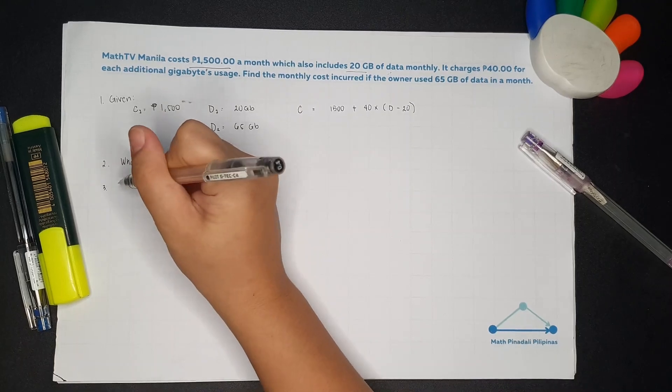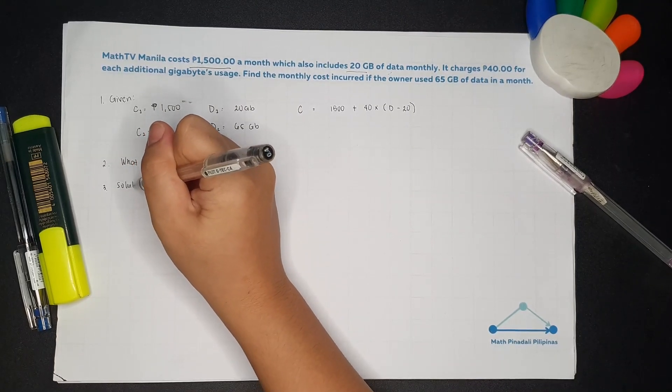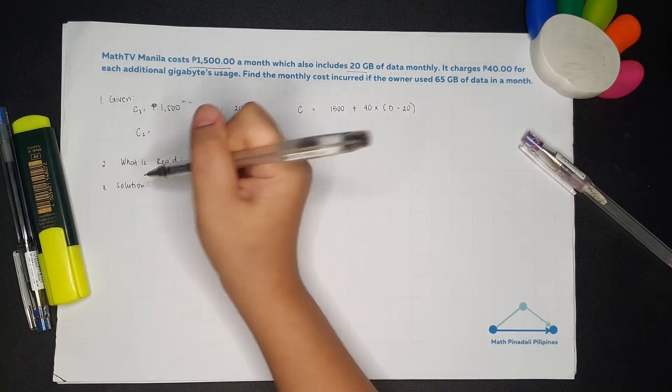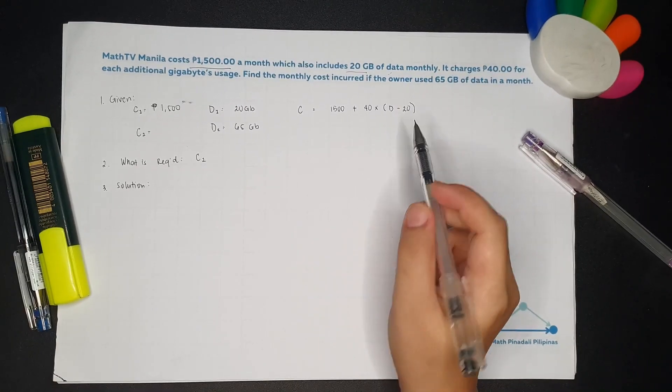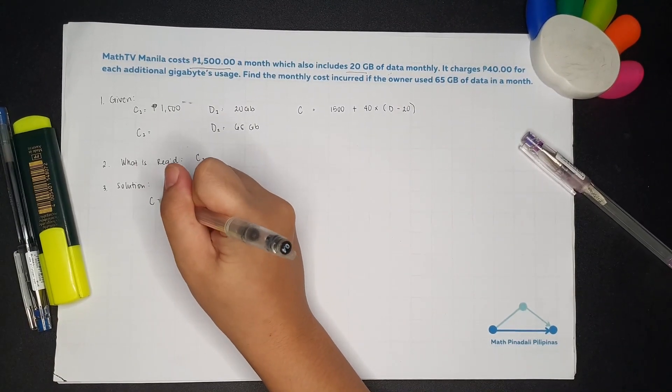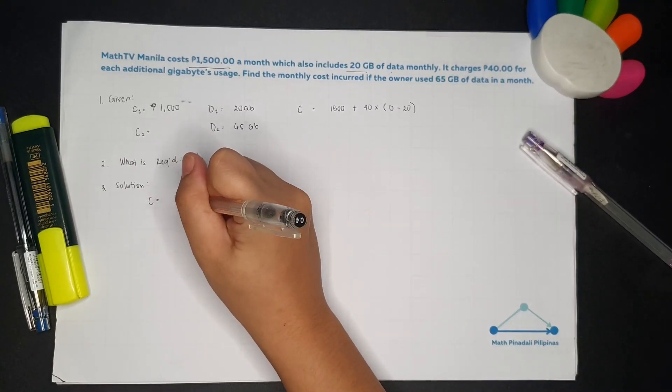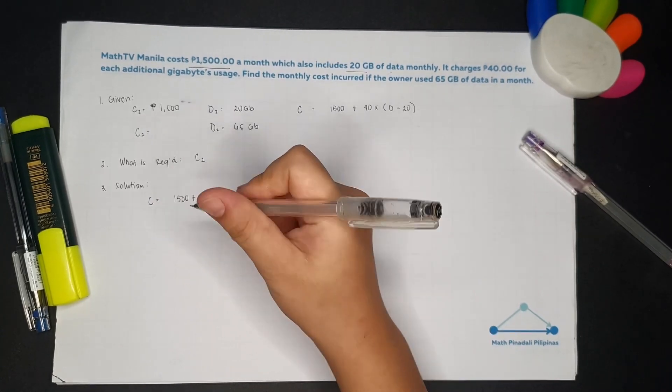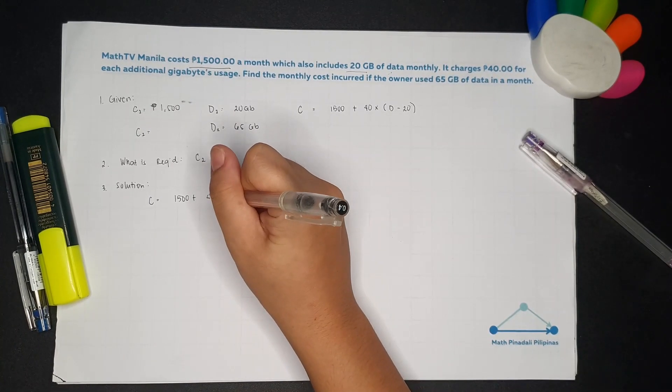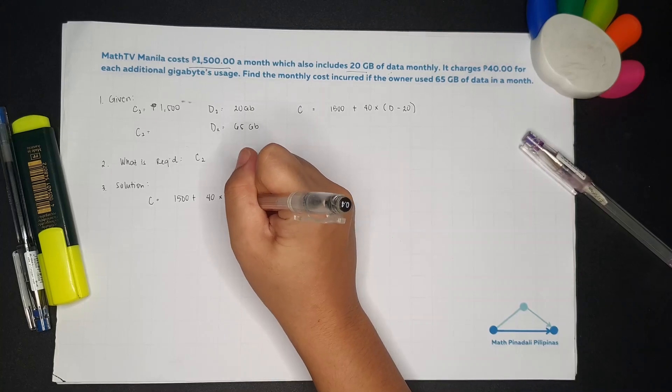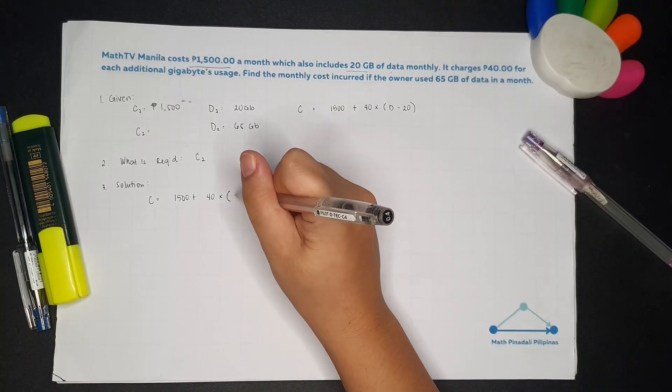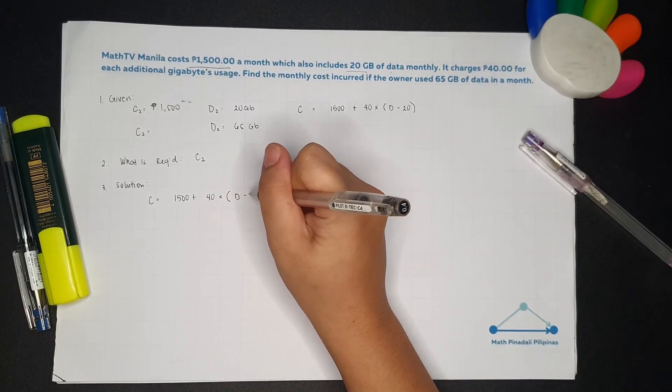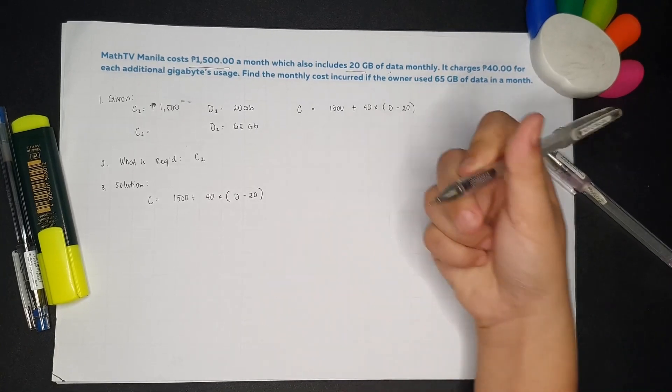So the next one is the solution. How do we solve this? Actually, we already put it here. So let's just copy it. C is equal to 1,500 for the first 20 GB, and then 40 multiplied by the excess beyond 20.